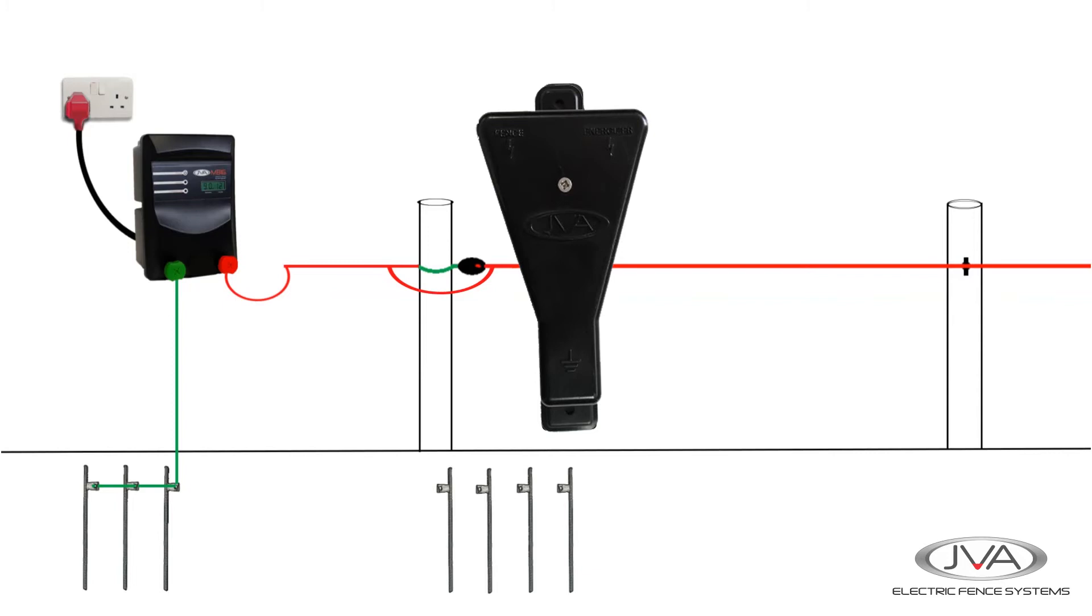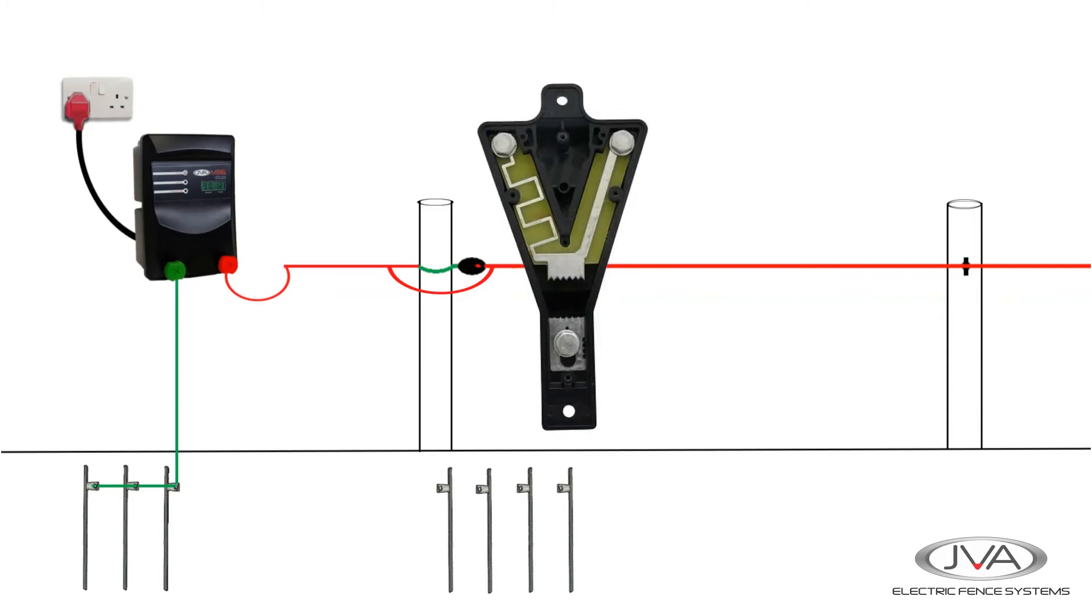Lightning always wants to travel in the straightest, easiest path to the ground. As you can see in the JBA V-type lightning diverter there is a thicker path from the fence side then a 120 degree turn and a thinner irregular path on the energizer side.